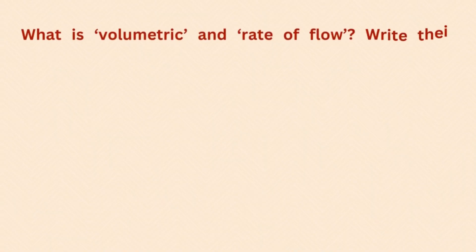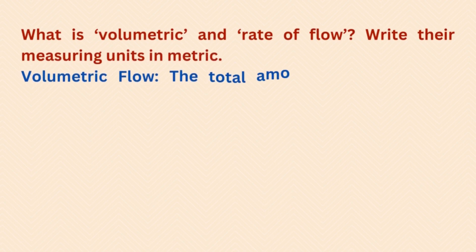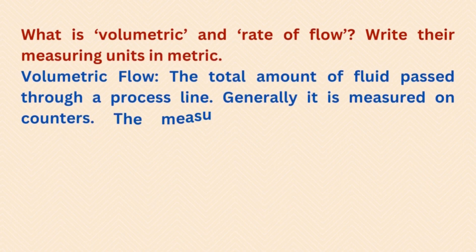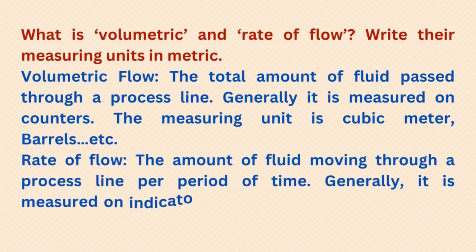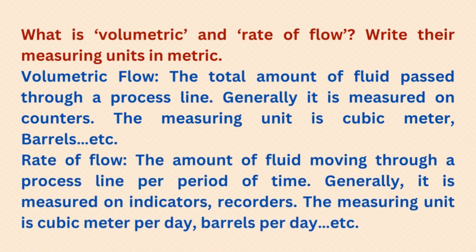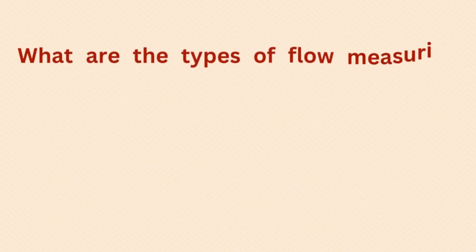What is volumetric and rate of flow? Write their measuring units in metric. Volumetric flow is the total amount of fluid passed through a process line; generally it is measured on counters, and the measuring unit is cubic meters, barrels, etc. Rate of flow is the amount of fluid moving through a process line per period of time; generally it is measured on indicators and recorders, and the measuring unit is cubic meters per day, barrels per day, etc.